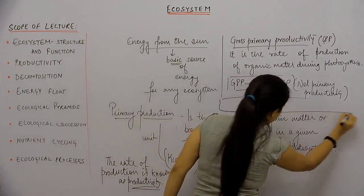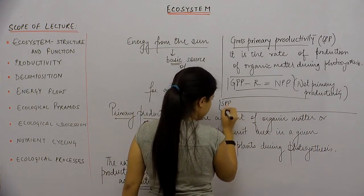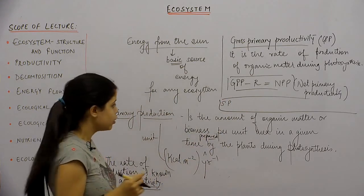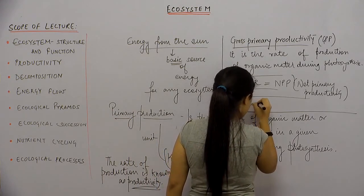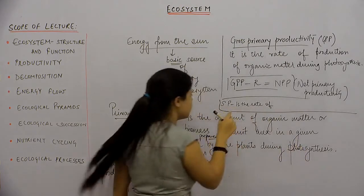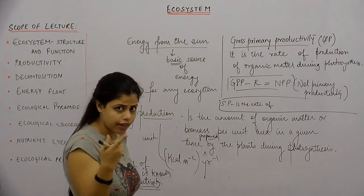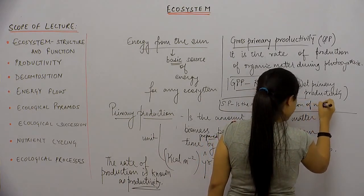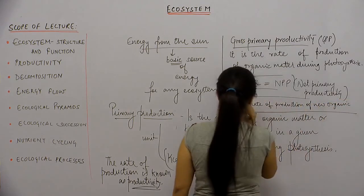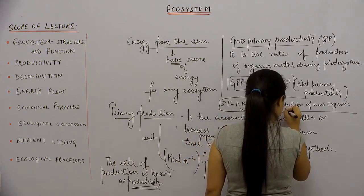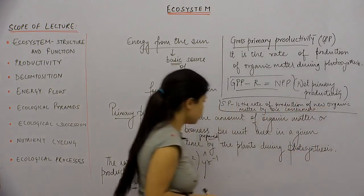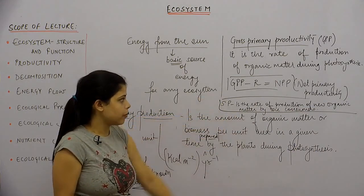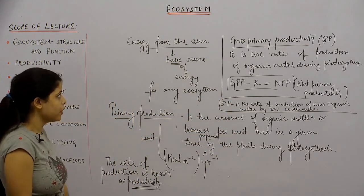Next is secondary productivity. Secondary productivity is the rate of production of new organic matter by the consumers. After primary production comes secondary production, which is the rate of production of new organic matter by the consumers.